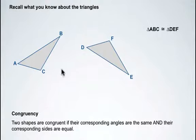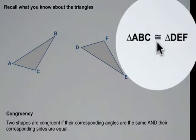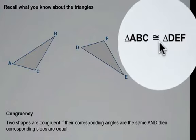In our diagram where we have triangle ABC and triangle DEF, if we were to say that those two triangles are congruent, and you can see the congruency sign here, so one triangle is congruent to the other.